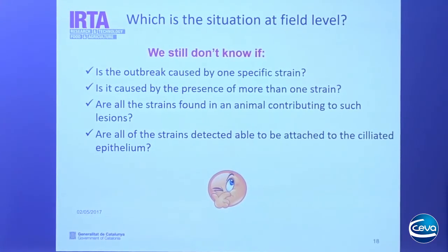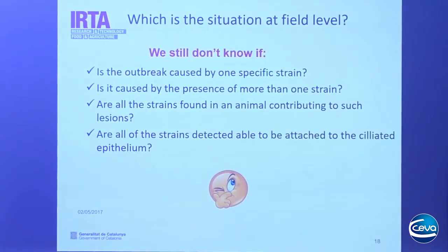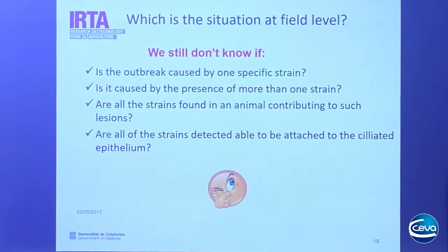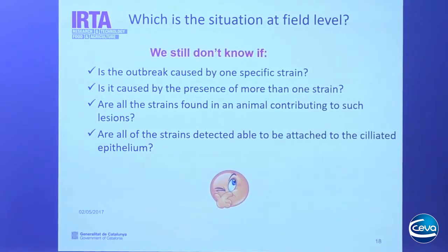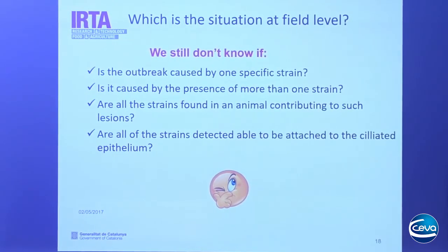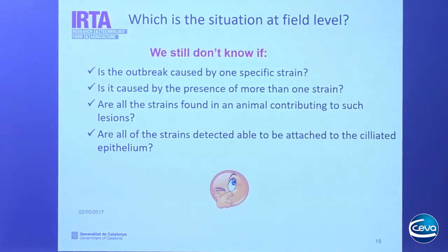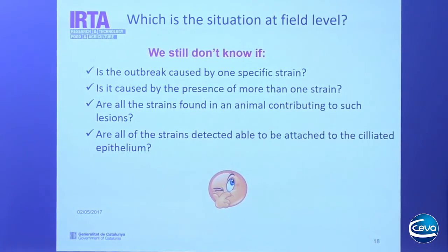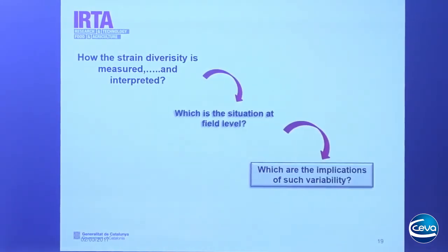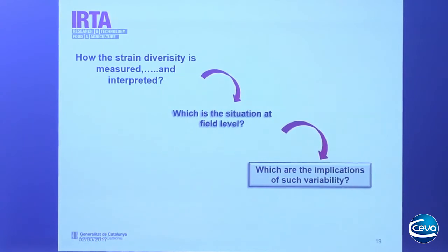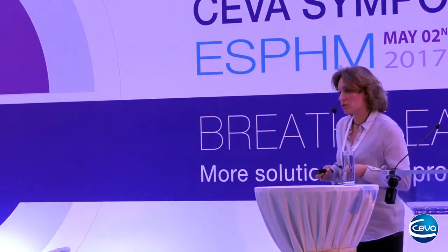As you can see, many questions remain unsolved regarding Mycoplasma strain variability. We still don't know if an outbreak is caused by one specific strain or by the presence of different strains. We also don't know if all strains found in an animal contribute to lesions — whether all are able to attach to ciliated epithelial cells, or only the main one causes lung lesions. Now that we know the field situation and that many questions remain, let's look at the implications of such variability.